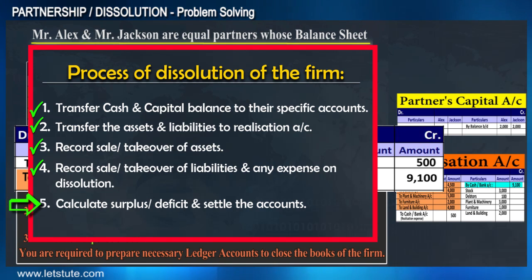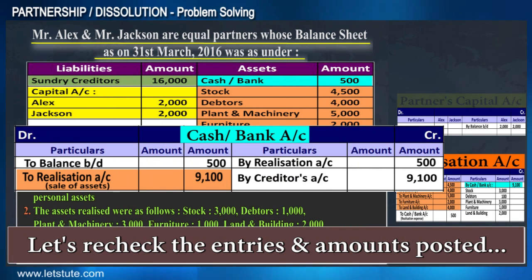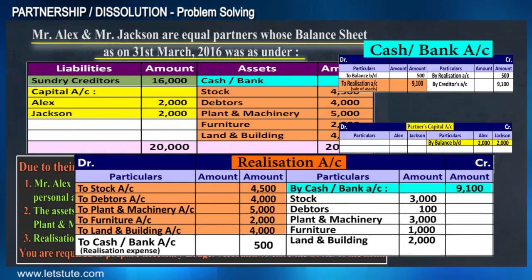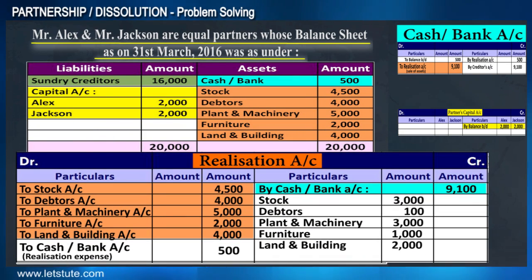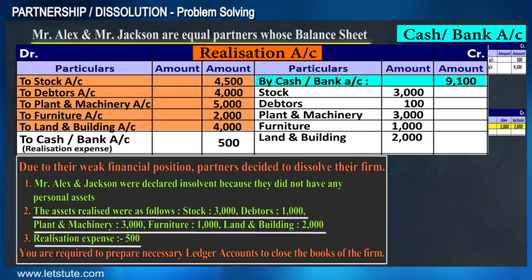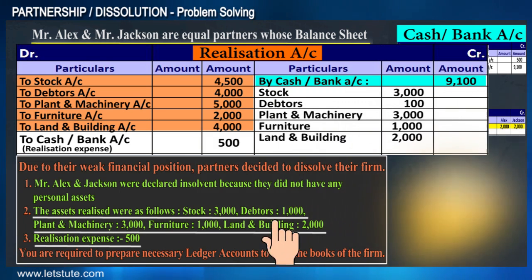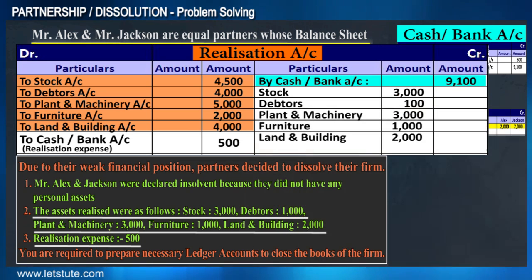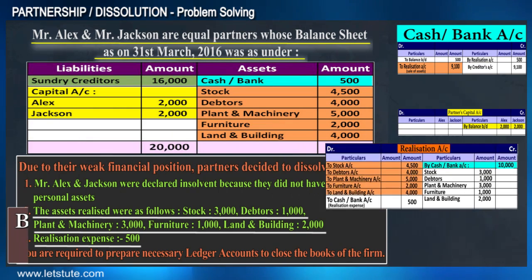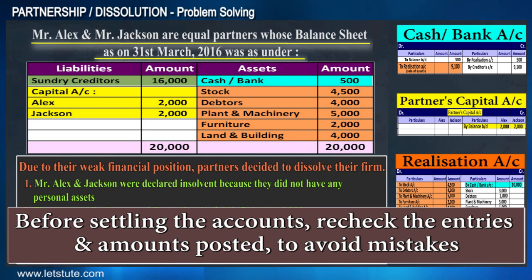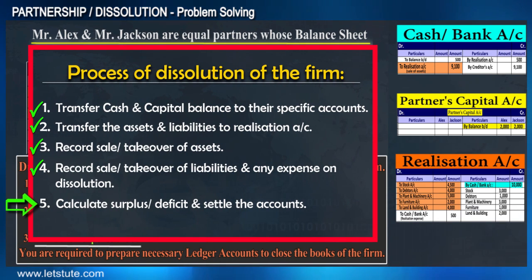Before moving to the last step of calculating surplus or deficit, let's check whether we have posted all entries and amounts correctly. We've checked the entries posted from the balance sheet and the additional information. Did you find any mistake? Yes — we have made one mistake: we posted the wrong amount for debtors. We correct the amounts here. Every time before closing and settling all accounts, we must recheck to avoid such silly mistakes.